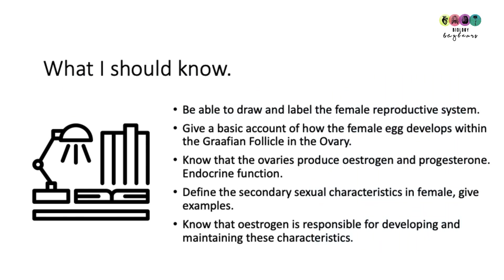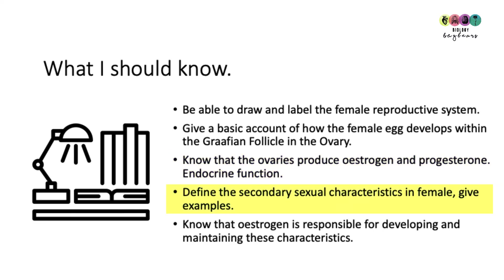At the end of this video you should be able to: draw and label the female reproductive system; give a basic account of how the female egg develops in the Graafian follicle in the ovary; know that the ovaries produce estrogen and progesterone and have an endocrine function; define secondary sexual characteristics and give examples in females; and know that estrogen is responsible for developing and maintaining those secondary sexual characteristics. Best of luck — make sure you're doing exam papers, writing your own notes, and using your textbook.